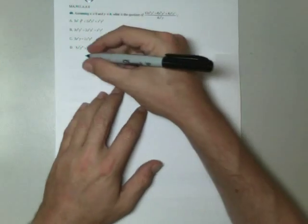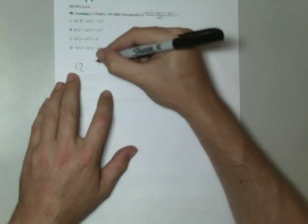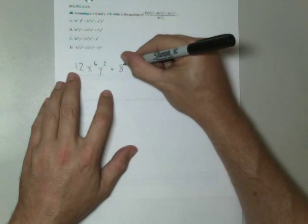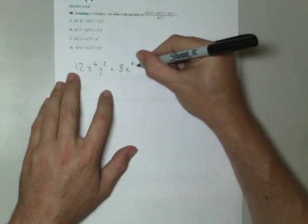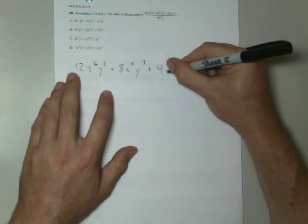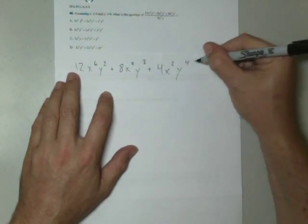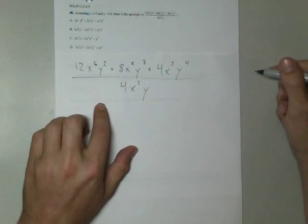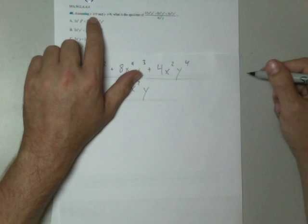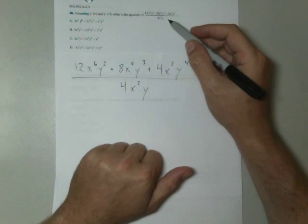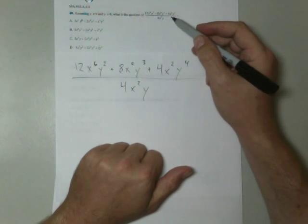Assuming x does not equal 0 and y does not equal 0, what is the quotient of 12x⁶y² + 8x⁴y³ + 4x²y⁴ all divided by 4x²y? Well, x can't equal 0 and y can't equal 0 because x and y are factors in the denominator and we can't divide by 0.